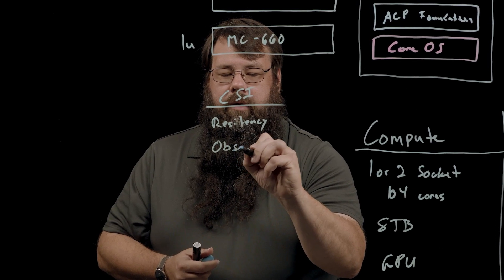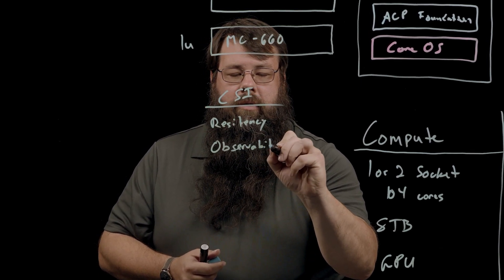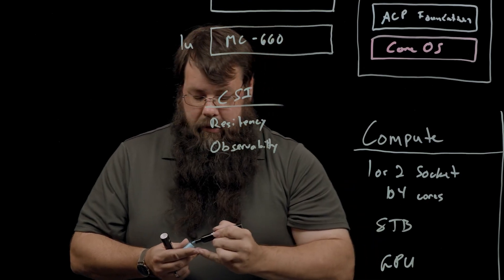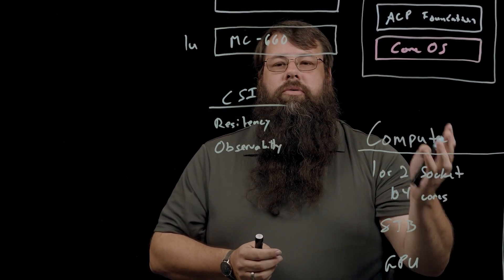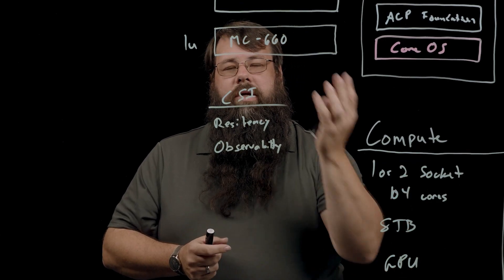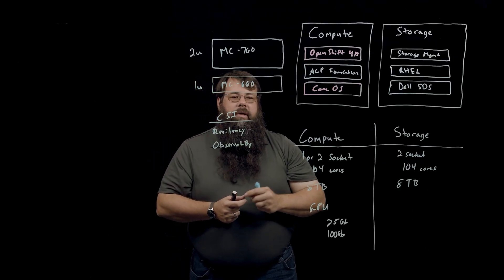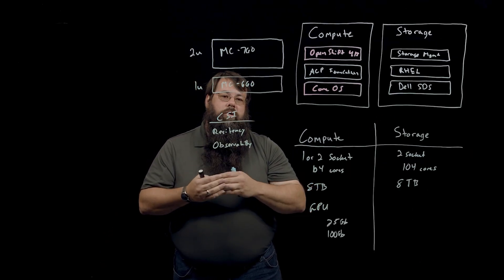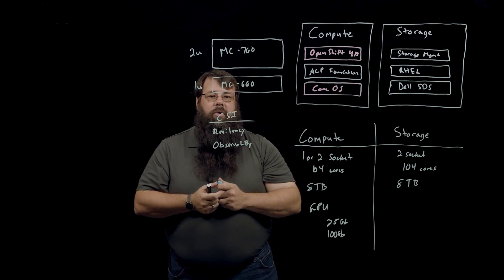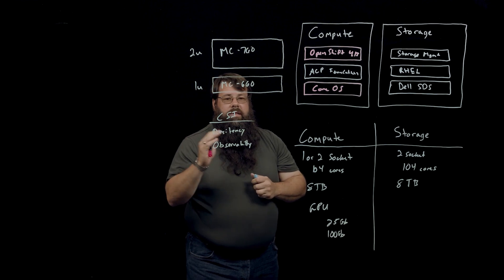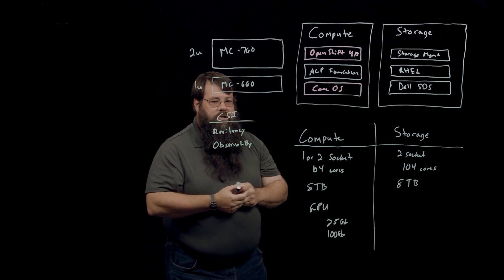Another one, the observability module. Observability allows you to pull in metrics into Kubernetes so that you can actually report on storage utilization, like IOPS and bandwidth, all the way down to a pod level. So, you can actually see how your applications are performing and how they're consuming storage.